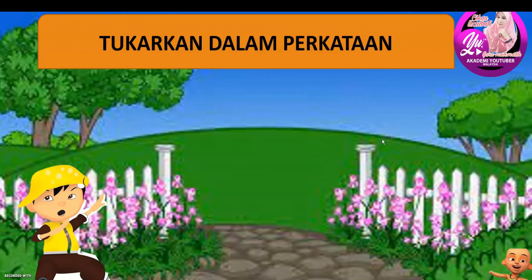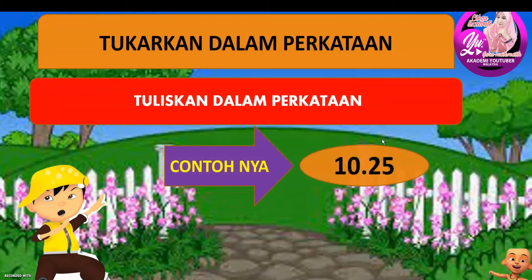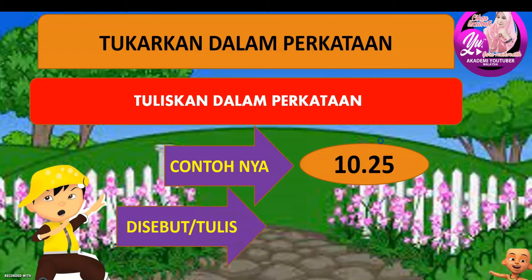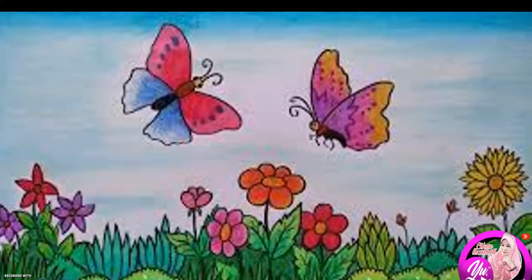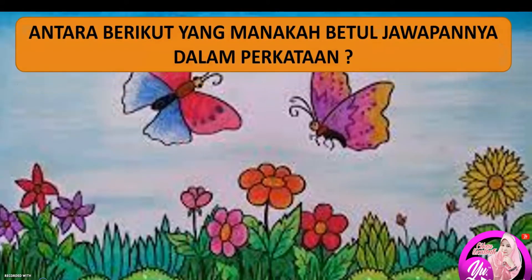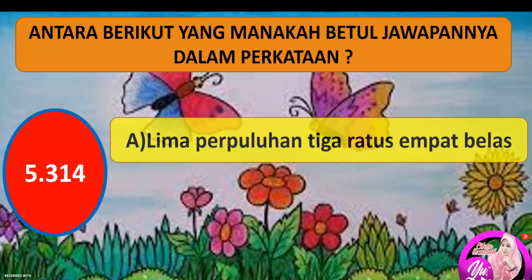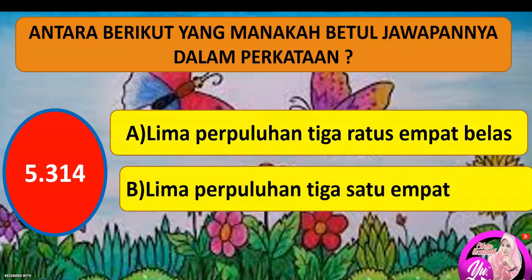Bila kita nak tukarkan dalam perkataan, tuliskan dalam perkataan. Contohnya: sepuluh perpuluhan dua lima. Disebut: sepuluh perpuluhan dua lima. Cuba adik-adik perhatikan antara berikut yang manakah betul dalam perkataan — A atau B? Jawapan yang betul adalah B: lima perpuluhan tiga satu empat. Bukan A, kerana A ada perkataan tiga ratus empat belas. Kita sebut selepas titik ialah satu persatu.